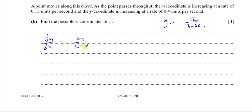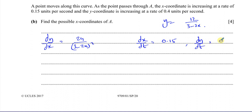As the point passes through A, the x-coordinate is increasing at 0.15 units per second, so dx/dt equals 0.15 — positive because it's increasing. The y-coordinate is increasing at 0.4 units per second, so dy/dt equals 0.4. Using related rates of change, we know that dy/dx equals dy/dt times dt/dx, and the dt's cancel out.